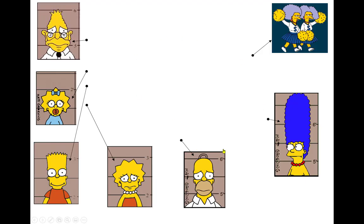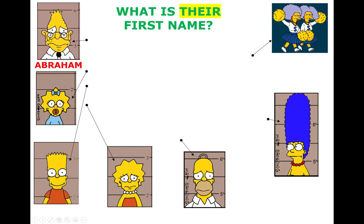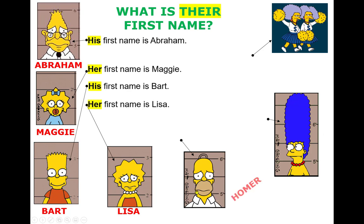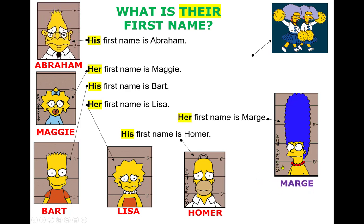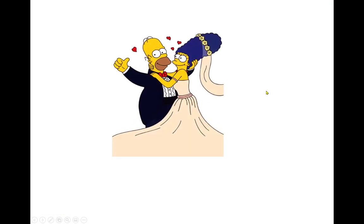First of all, let's revise their names. This is Abram — his first name is Abram. This is Maggie — her first name is Maggie. This is Bart — his first name is Bart. This is Lisa — her first name is Lisa. This is Homer — his first name is Homer. This is Marge — her first name is Marge.